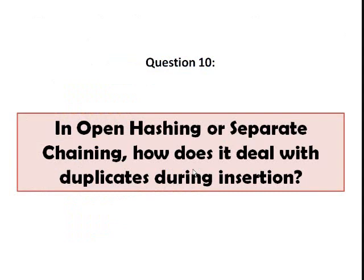Number ten, in open hashing or separate chaining, how does it deal with duplicates during insertion? The technique is similar with binary search trees. You just simply keep an extra field which will be incremented in the event of a match. You don't actually need to insert the duplicate in your hash table, but just simply increment that field that keeps track of the duplicates.